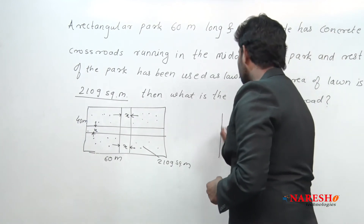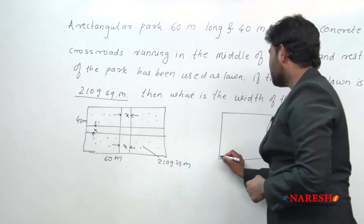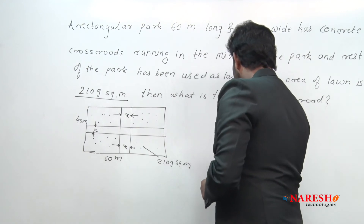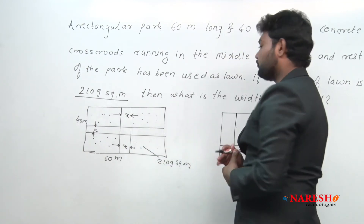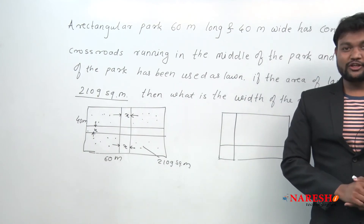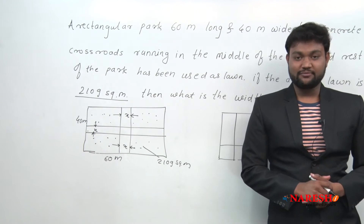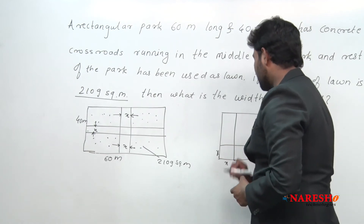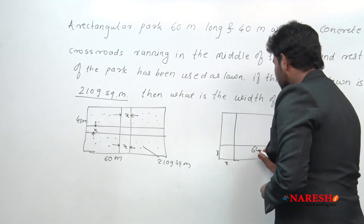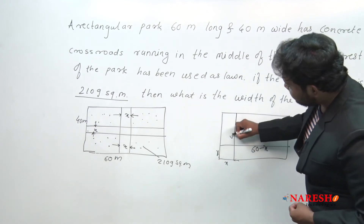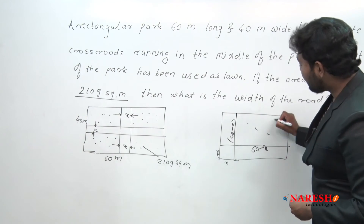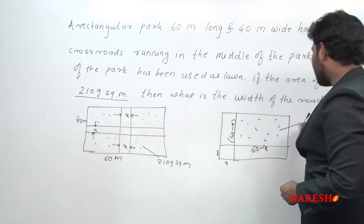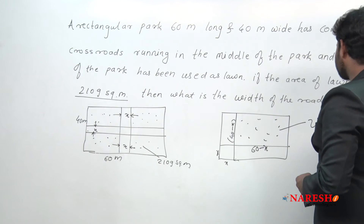Suppose this is a rectangular area. What I am doing is shifting one road toward this side. According to this kind of shifting the meaning of the question is going to change, but the values remain the same. This is x and this is also x, so this will be 60 minus x and this will be 40 minus x, and the rest of the park used as lawn is 2109 square meter.